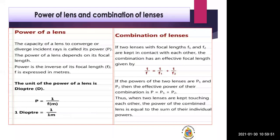To summarize: if two lenses with focal lengths F1 and F2 are kept in contact, the effective focal length is 1/F = 1/F1 + 1/F2. If the powers of two lenses are P1 and P2, the effective power of their combination is P = P1 + P2. When two lenses touch, the combined power equals the sum of individual powers.